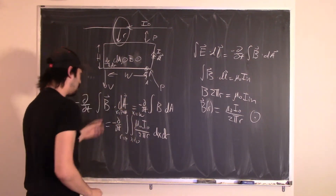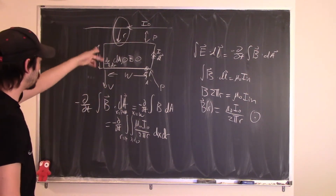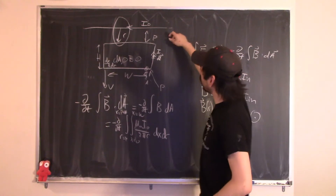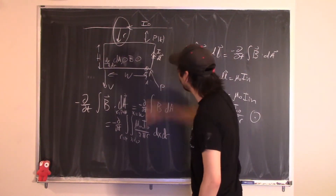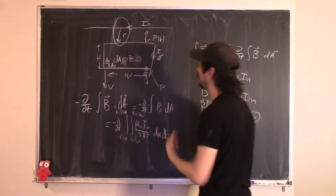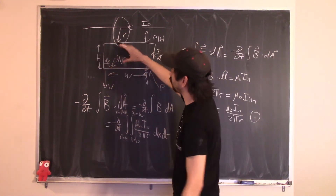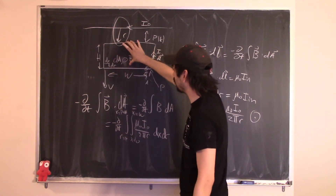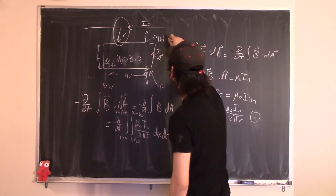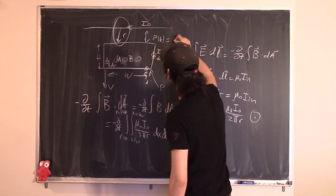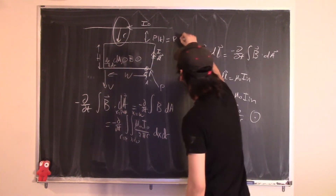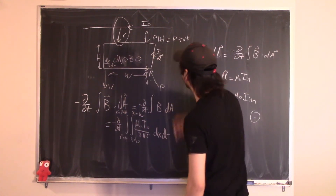We must be careful: P is a function of time because the loop is moving with constant velocity V. So P as a function of time is really P plus V times t.